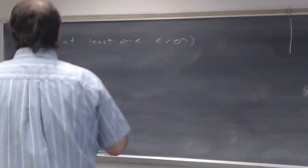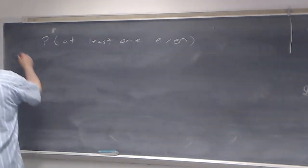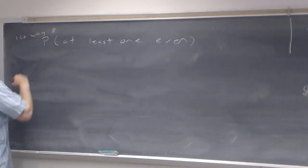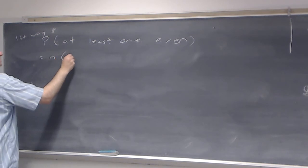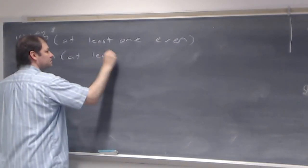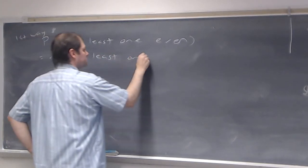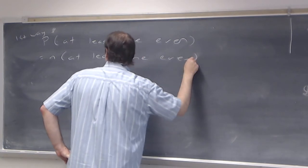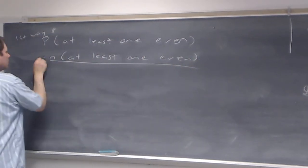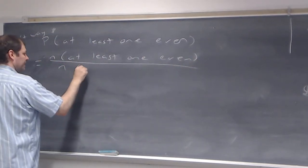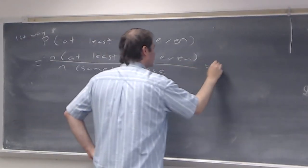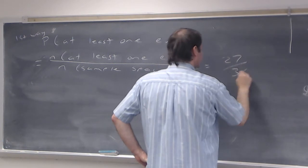So the first method: the probability of at least one even equals the number of ways of getting at least one even over the number in the sample space, which is 27 over 36.